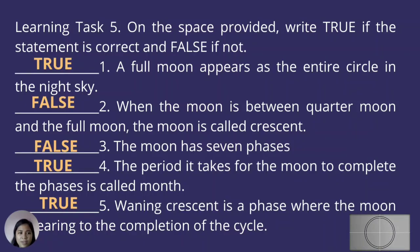The correct answers are: Number 1 — True. Number 2 — False. Number 3 — False. Number 4 — True. Number 5 — True.